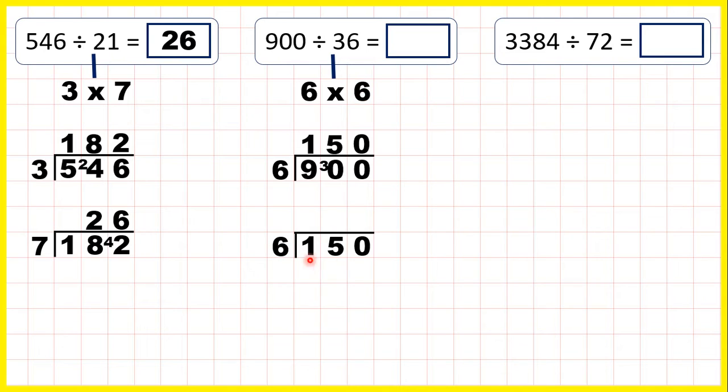Now taking the first two digits together, 15 divided by 6 is 2 remainder 3, and 30 divided by 6 is 5. So 900 divided by 36 is 25.